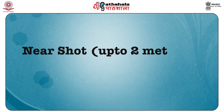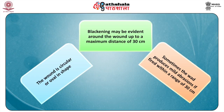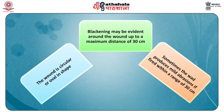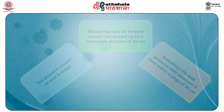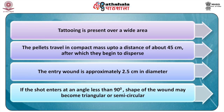In a near shot at up to 2 meters, the wound is circular or oval in shape. Blackening may be evident around the wound up to a maximum distance of 30 centimeters. The wad may produce mild abrasions if fired within 30 centimeters. Tattooing is present over a wide area. The pellets travel in a compact mass up to about 45 centimeters, after which they begin to disperse. The entry wound is approximately 2.5 centimeters in diameter. If the shot enters at an angle less than 90 degrees, the wound may become triangular or semi-circular.